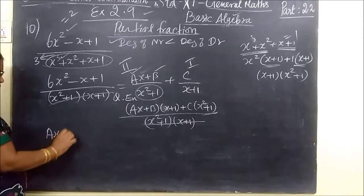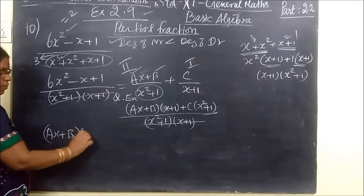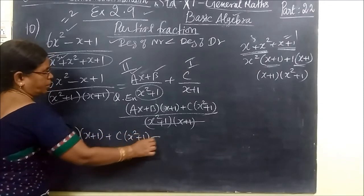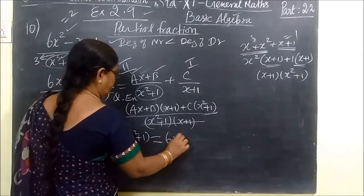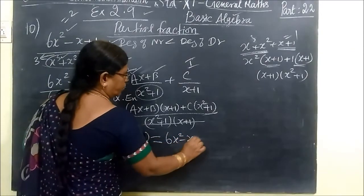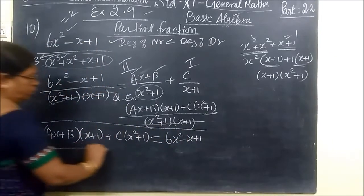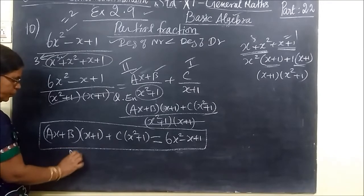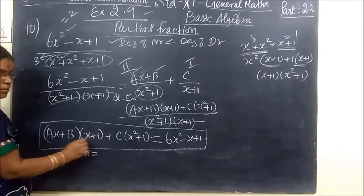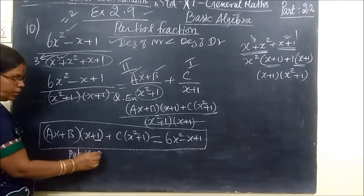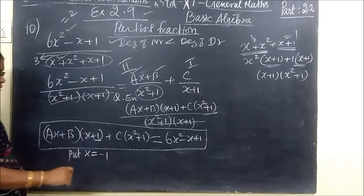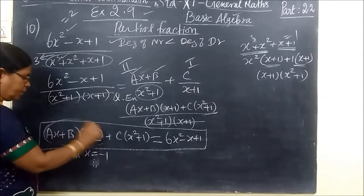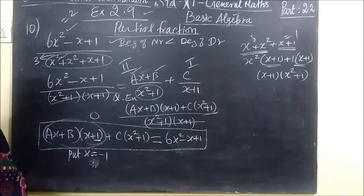So you write the remaining. Ax plus B, x plus 1, plus C bracket, x² plus 1 minus 1. Ax plus B, x plus 1 is Ax² plus...